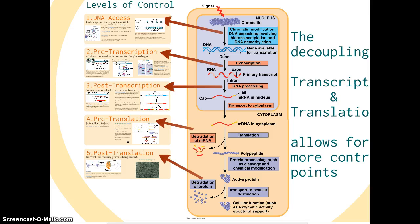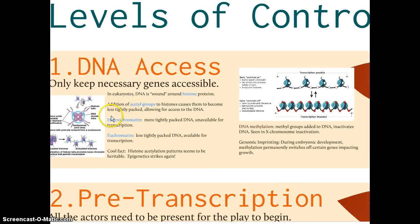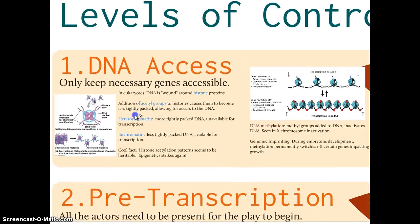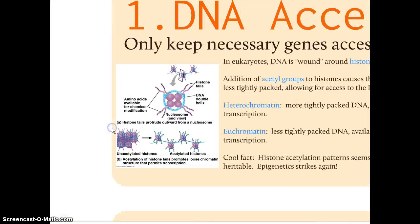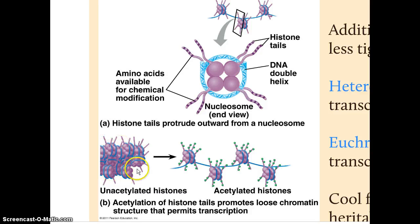We'll go through these individual steps point by point. Initially, we're going to look at whether or not the DNA can even be accessed. If we look closely, we see that DNA — or chromosomes — are wrapped around these little histone proteins. When the DNA is packed tightly around these proteins, the bases in the middle of the rungs are not accessible to RNA polymerase to transcribe the genes.